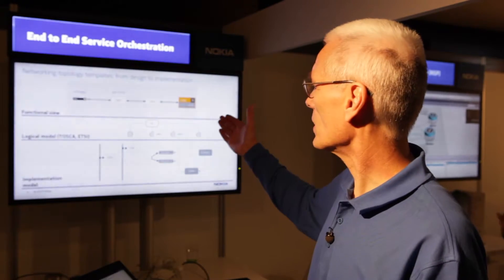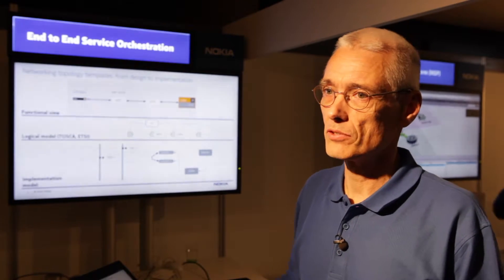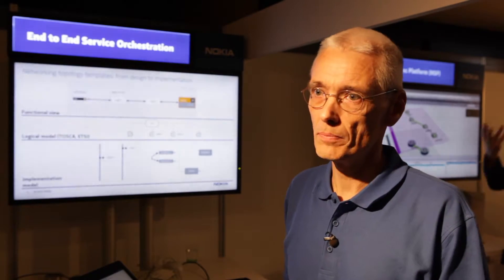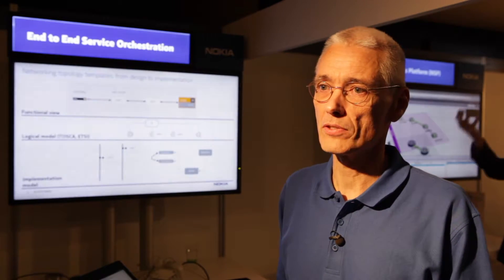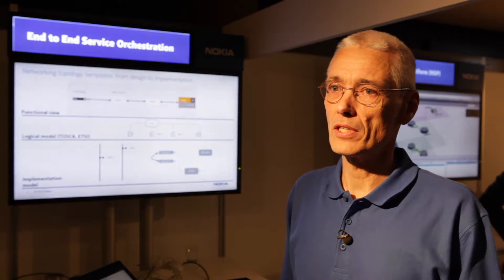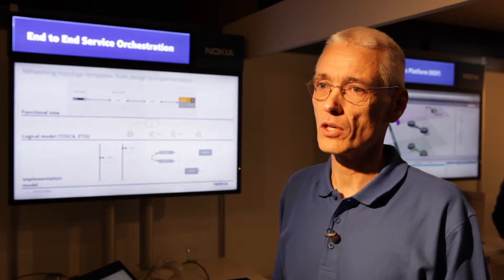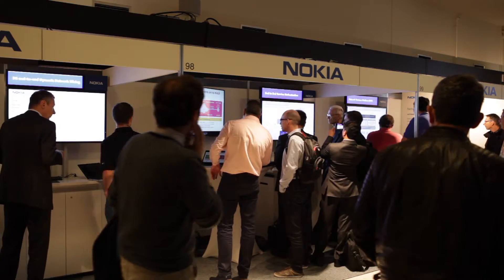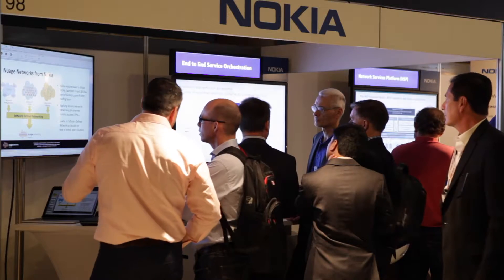As you can see on this slide, the functional view is translated to a Tosca model using virtual links and connection points. And that, in turn, is translated to the specific network concepts of the SDN controller, like domains, subnets, and so on.